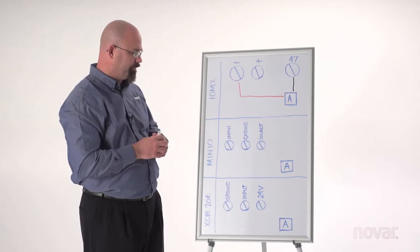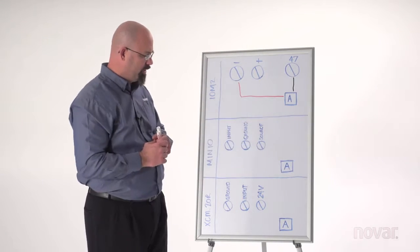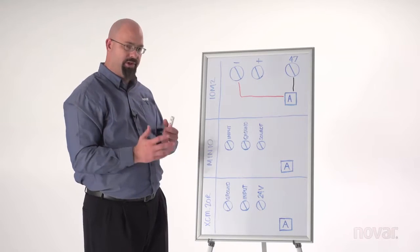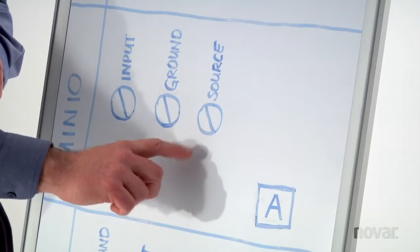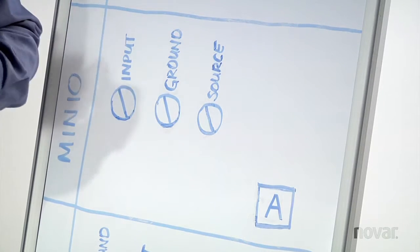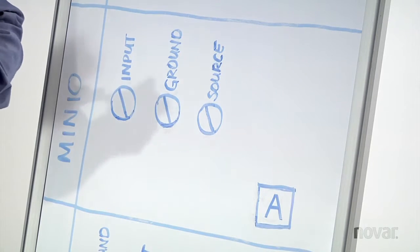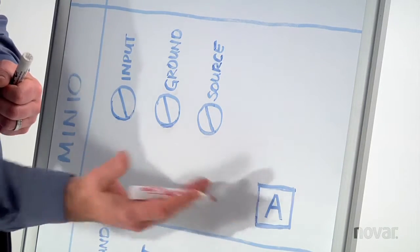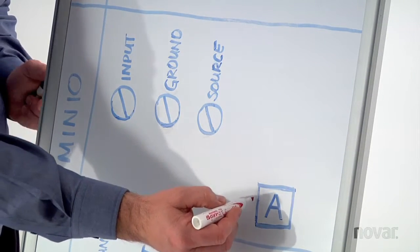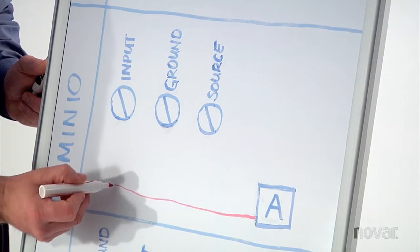We come down here to the MIN-IO. Same scenario, this sensor is remotely powered. So the first terminal we check off that we do not want to use is the source. The source terminal is a 24 volt DC power source. Obviously we don't want that. That sensor has its own transformer. So we'll use the NOVAR white wire again from that sensor's output terminal, and that's going to go to your input terminal here.